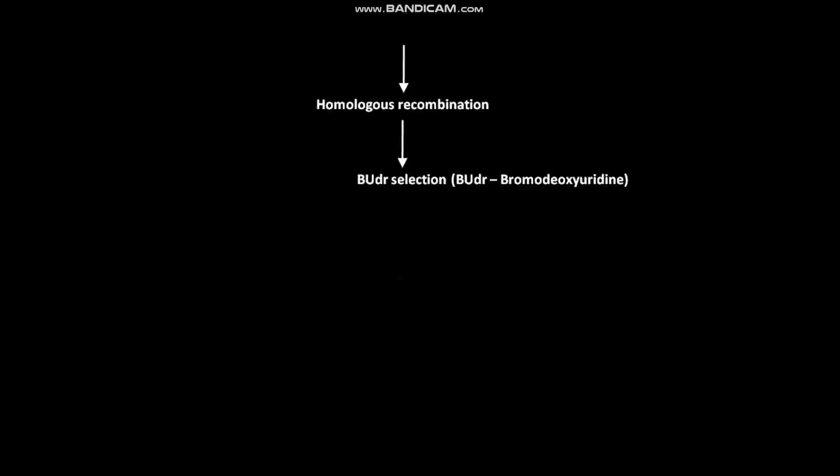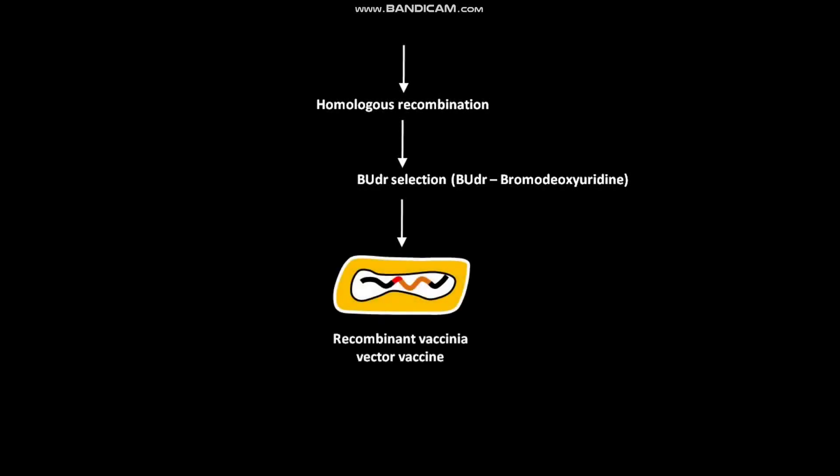Tissue culture cells are now added with BUDR. This BUDR addition selects the tissue culture cells containing the recombinant vaccinia virus. This process is called BUDR selection. BUDR stands for Bromodeoxyuridine. After BUDR selection, the recombinant vaccinia vector vaccine is formed.